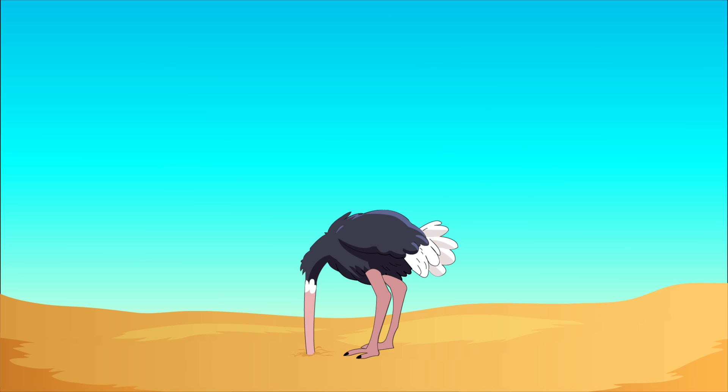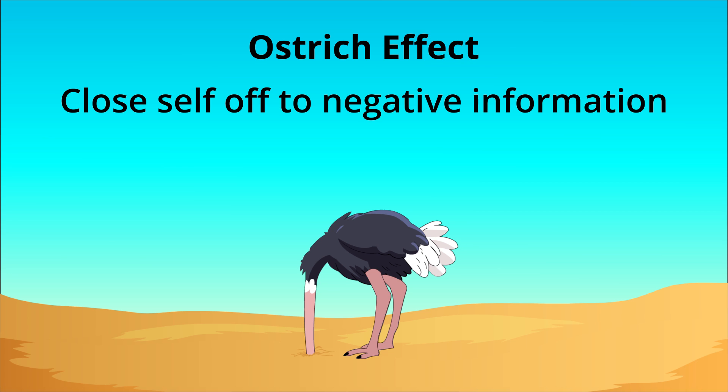The primary reason people ignore information is to avoid the possible negative emotional impact that it may bring, even if it's imperative to know, and ignorance will cause even greater issues in the future. The Ostrich Effect is a cognitive bias in which people close themselves off from information they perceive to be potentially emotionally harmful, despite the information's importance.